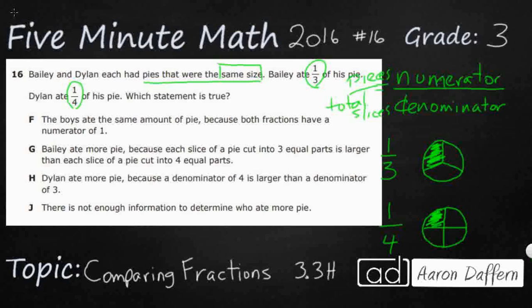Well, let's take a look at these statements. F says the boys ate the same amount of pie because both fractions have a numerator of one. They do both have a numerator of one, and whenever you have a numerator of one, it's called a unit fraction - it's the smallest fraction in a set.